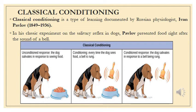Classical conditioning is a type of conditioning method prevalent in behavioral sciences or behavioral ecology. It is a type of learning documented by Russian psychologist Ivan Pavlov in his classical experiment on the salivary reflexes in dogs. Pavlov presented food right after the sound of a bell, conditioning the dog with different well-defined stimuli and associating both stimuli to elicit a strong response, which laid the foundation for his famous theory of classical conditioning.